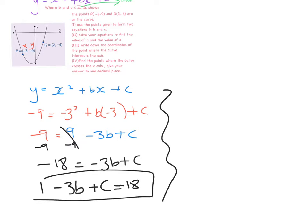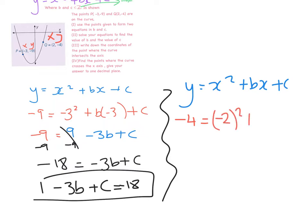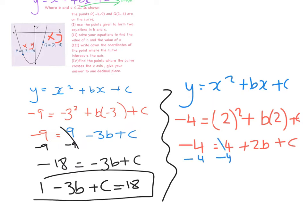I'm going to do the exact same thing with the second point. The curve is y equals x squared plus bx plus c, and the point (2, -4) is on it, which means when I substitute it in, it should work perfectly. So: minus 4 equals 2 squared plus b times 2 plus c. That gives me minus 4 equals 4 plus 2b plus c. Subtracting 4 from both sides gives minus 8 equals 2b plus c, which rearranges to 2b plus c equals minus 8.